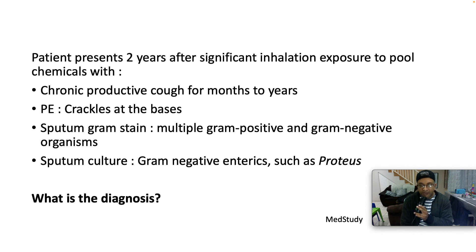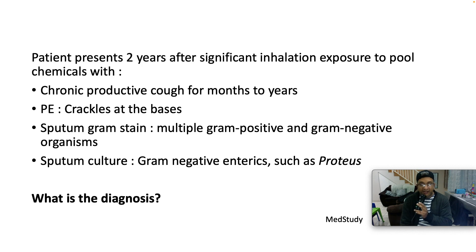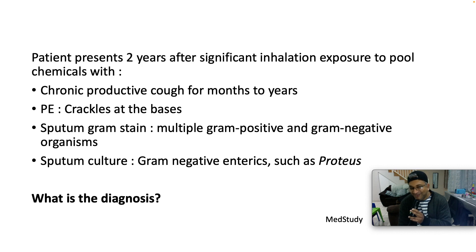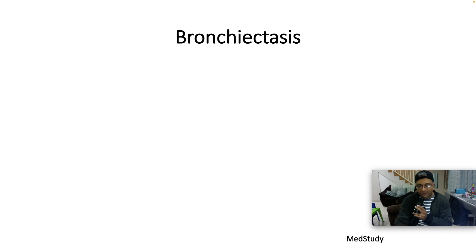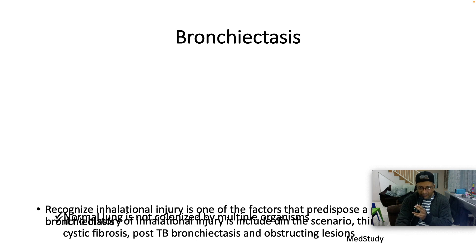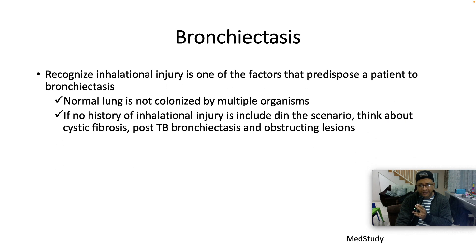Sputum gram stain shows multiple gram-positive and gram-negative organisms, and sputum culture shows gram-negative enterics such as Proteus mirabilis as one of the examples. What is the diagnosis? The patient also has clubbing. Bronchiectasis.